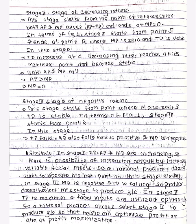In the second stage, TP is maximum and factor inputs are utilized optimally. A rational producer always selects Stage 2 to produce goods and services so that he or she can optimize profit, or aim at profit maximization. Factor inputs are maximally utilized in this stage.